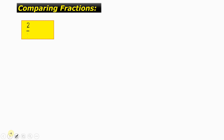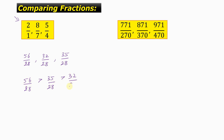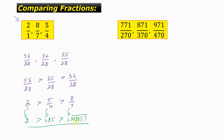Now a similar concept but a totally different question. We have 2/1, 8/7, and 5/4, and also 771/270, 871/370, and 971/470. For the first question, making denominators equal to 28: 2/1 becomes 56/28, 5/4 becomes 35/28, and 8/7 becomes 32/28. Now 56 is greater than 35 is greater than 32, so 2/1 is greater than 5/4 is greater than 8/7. In decimal: 2 is greater than 1.25 is greater than 1.142857 repeating.